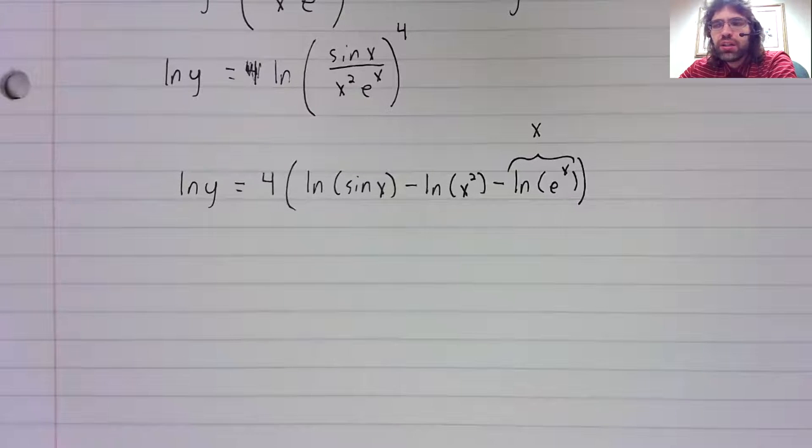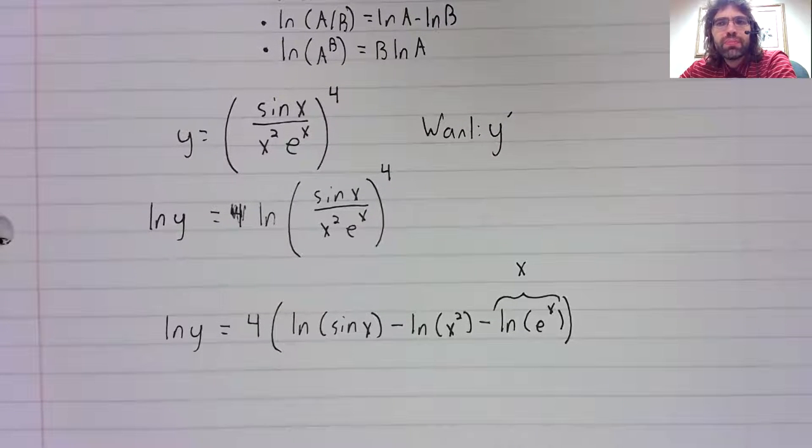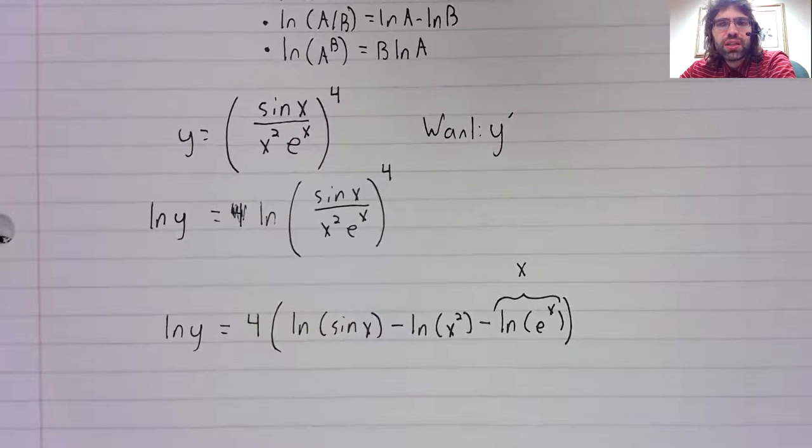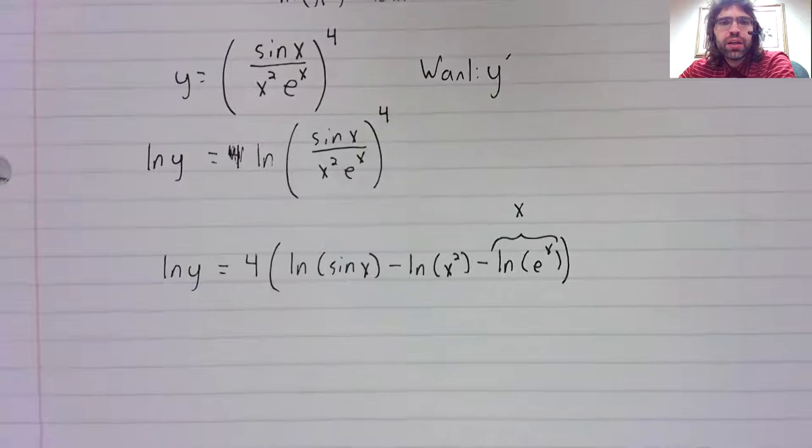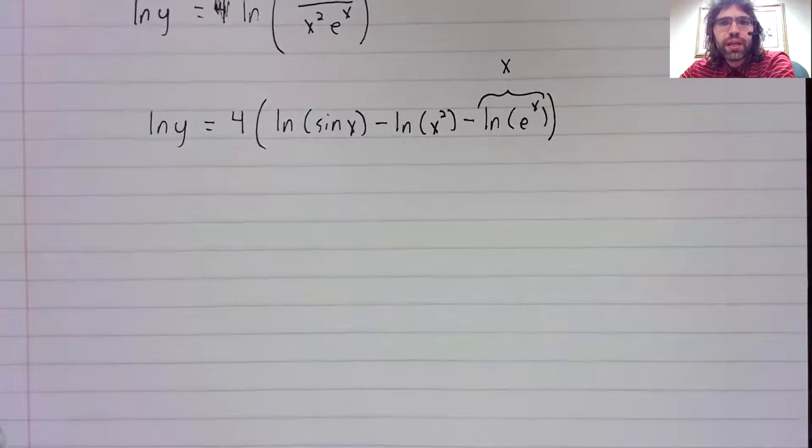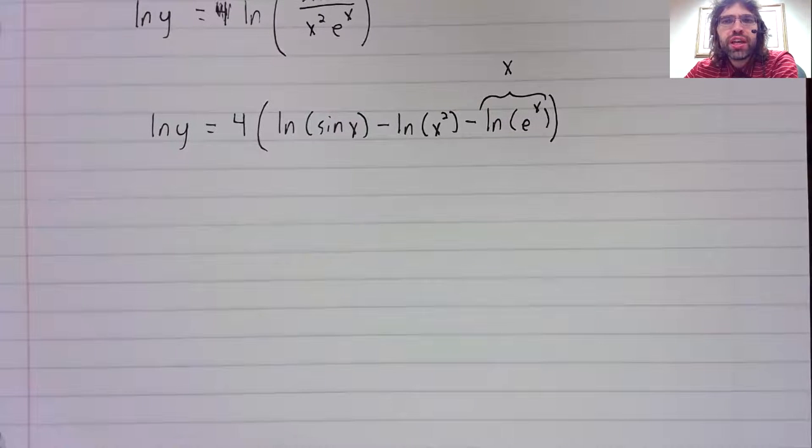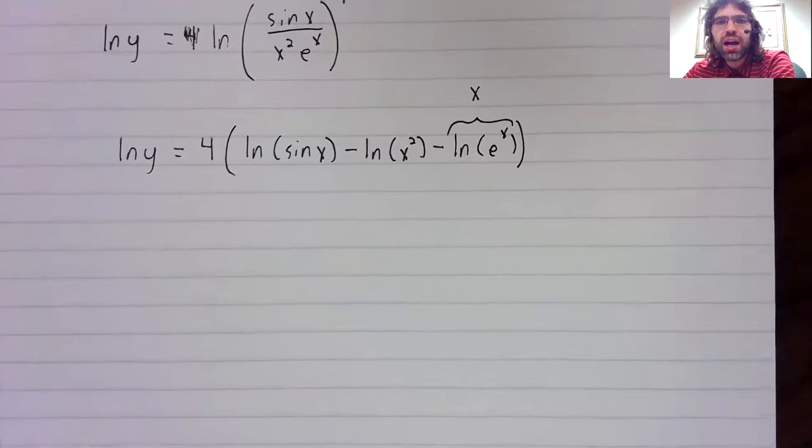And what we've done is take our non-implicit equation and replaced it with an implicit equation. And now I'm going to differentiate both sides.